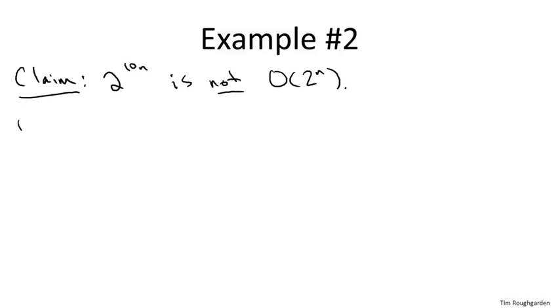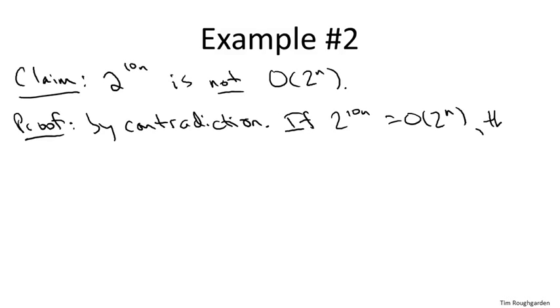So once again, usually the way you prove that one thing is not big O of another is by contradiction. So we're going to assume the contrary, that two to the ten n is in fact big O of two to the n. What would it mean if that were true? Well, by the definition of big O notation, that would mean there are constants c and n naught so that for all large n, two to the ten n is bounded above by c times two to the n.